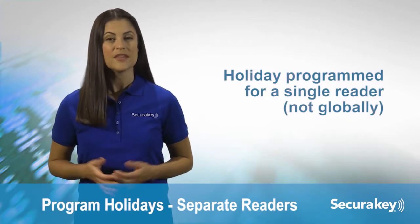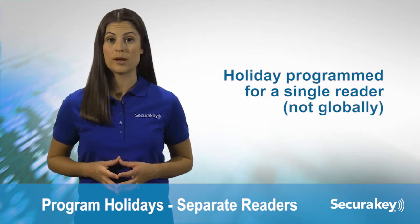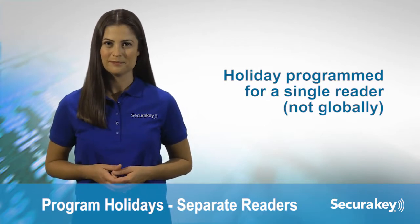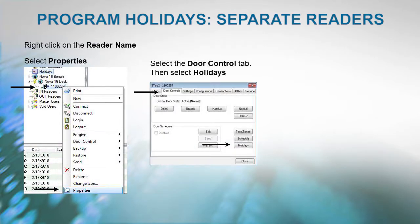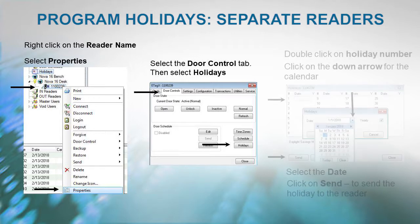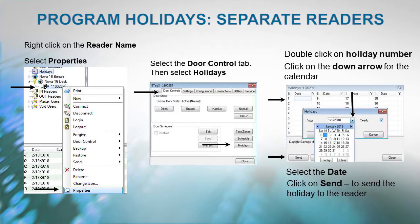There might be a need to have a holiday programmed for a single reader, not globally. Right-click on a reader and select Properties, select the Door Control tab, then select Holidays. Double-click on the holiday number, click on the down arrow for the calendar, select the date, then click Send to send the holiday to the reader.